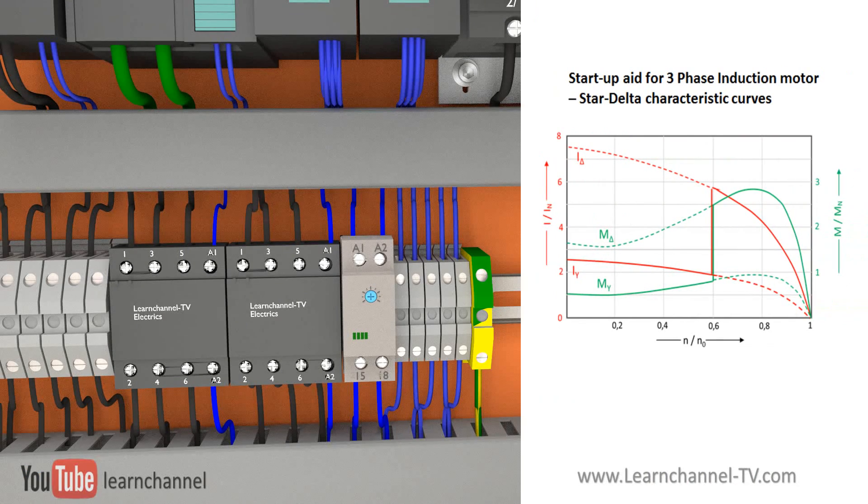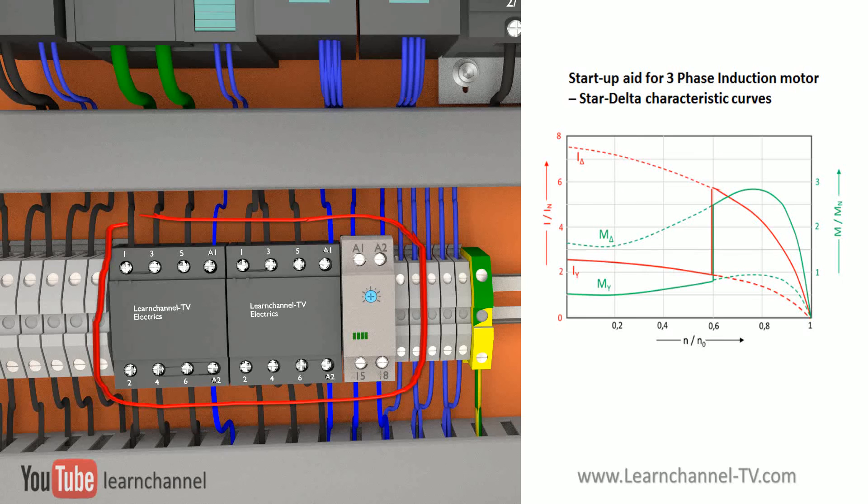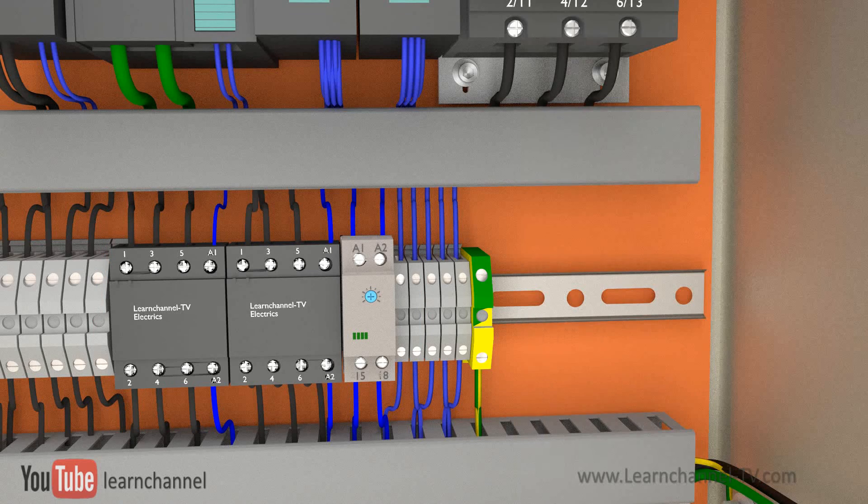The soft starter can be seen as the better alternative to star-delta startup. Switching from star to delta means hard switching to a three times higher torque, and thus more stress to the parts. In addition, for star-delta switching, you need two big contactors and a time relay, so you might also save space by using a soft starter.